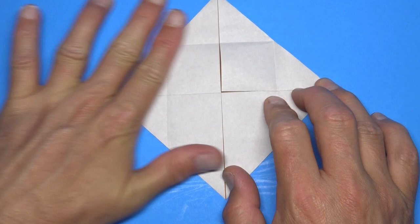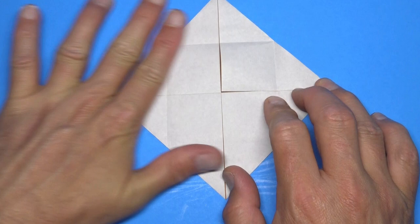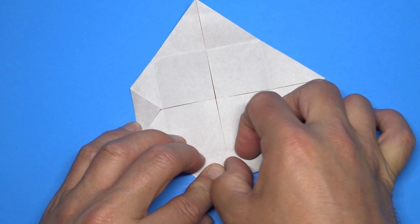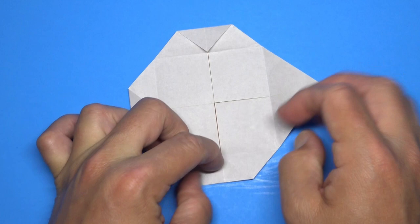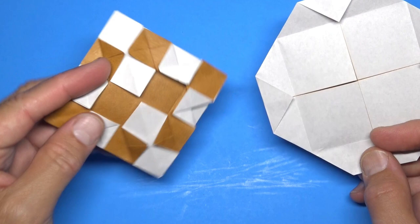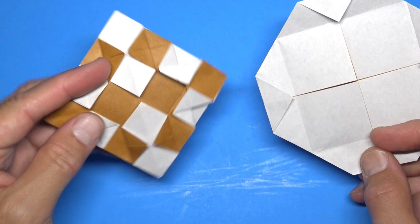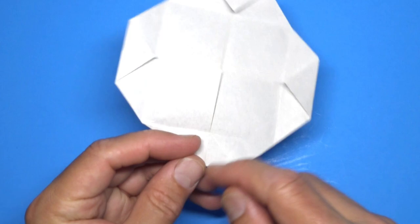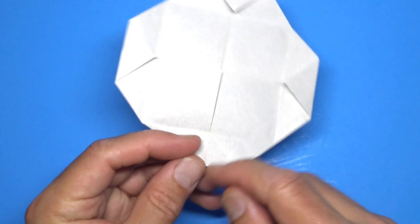And now fold the corners to the creases. Okay, now this next step, only do if you want to connect four of these together. Fold between this point and this point. And repeat all the way around.